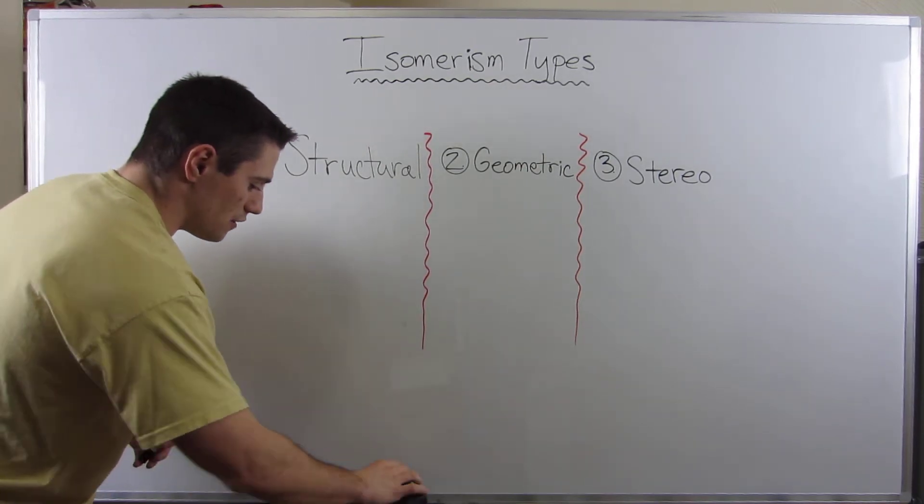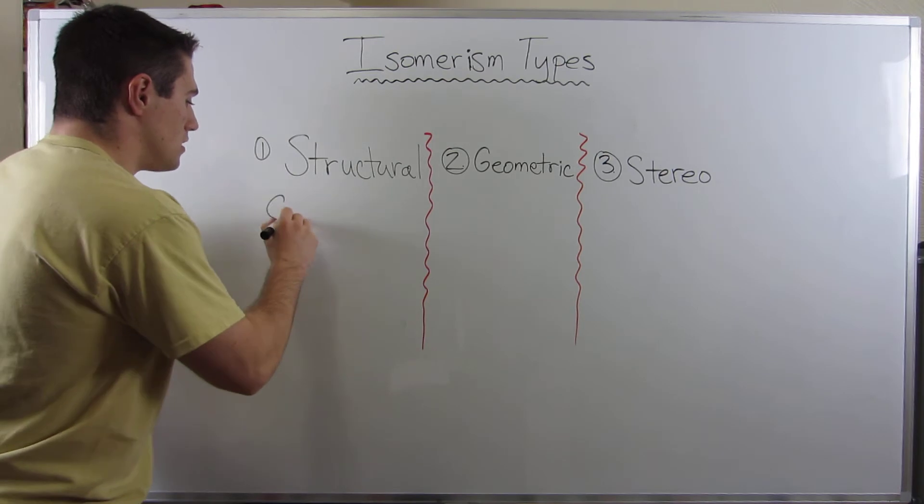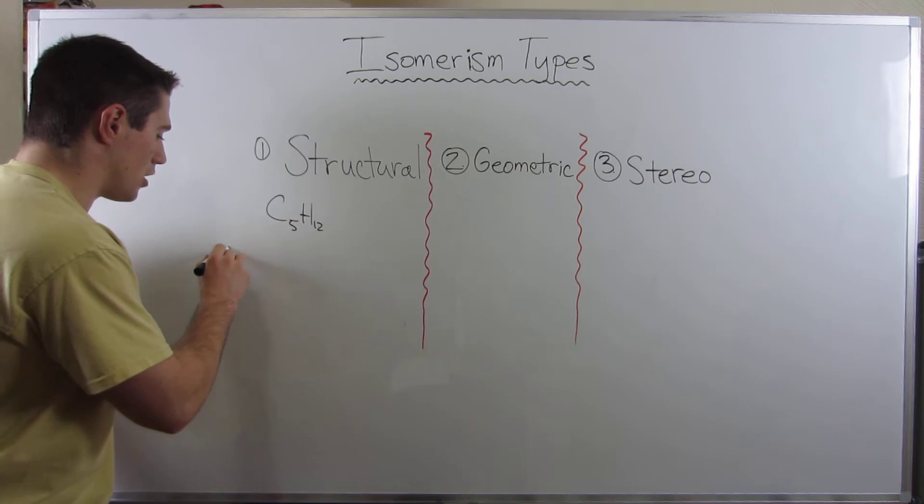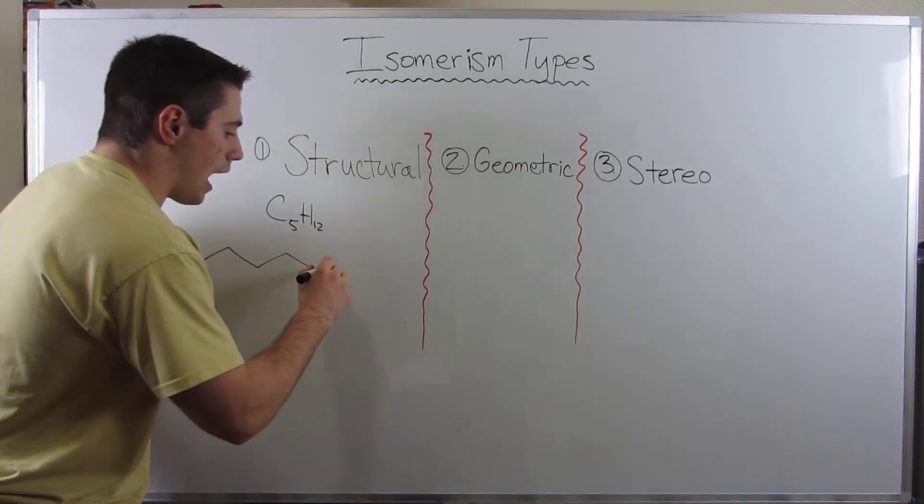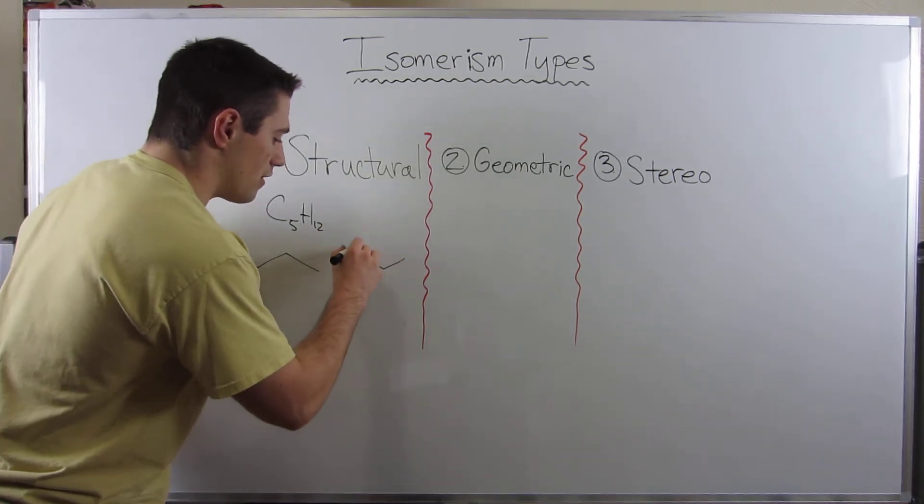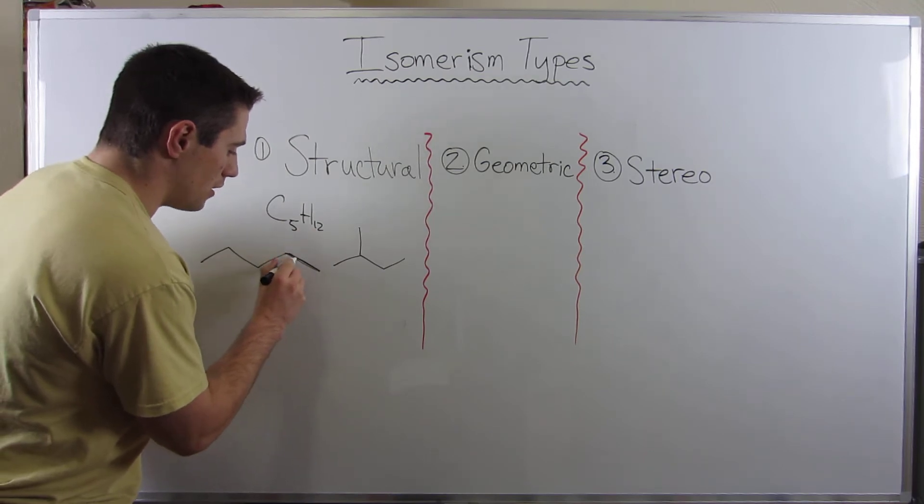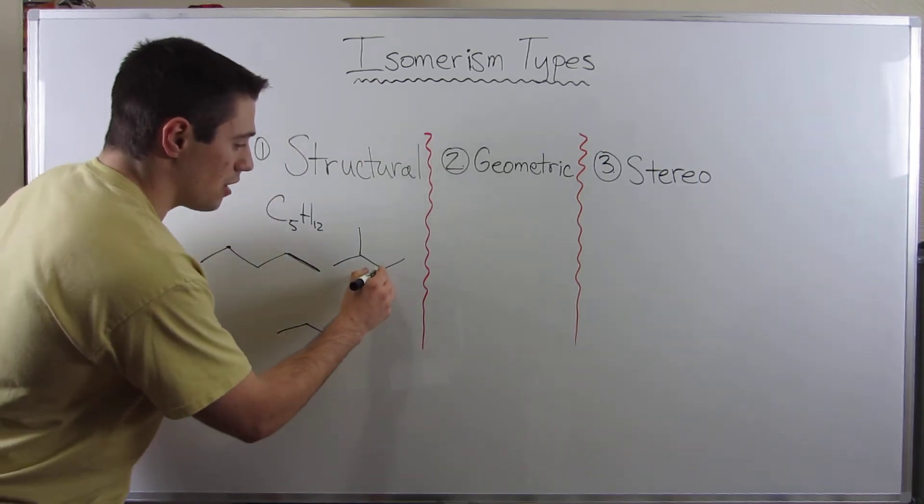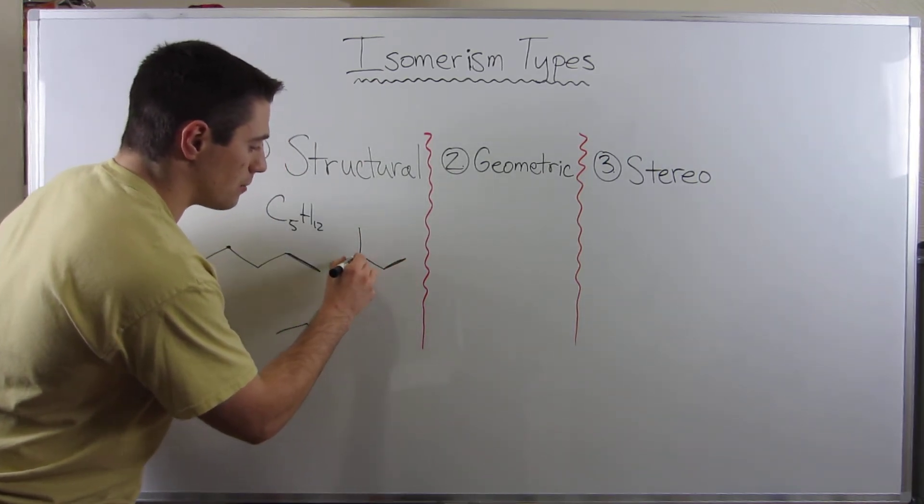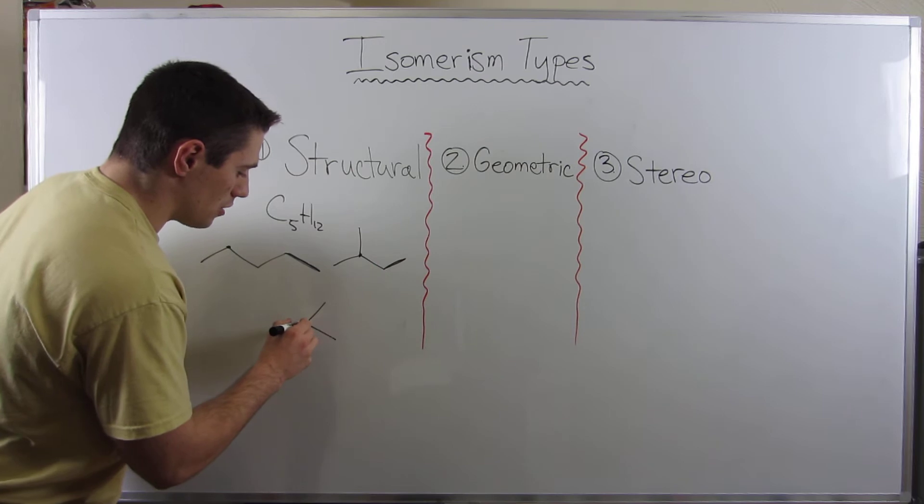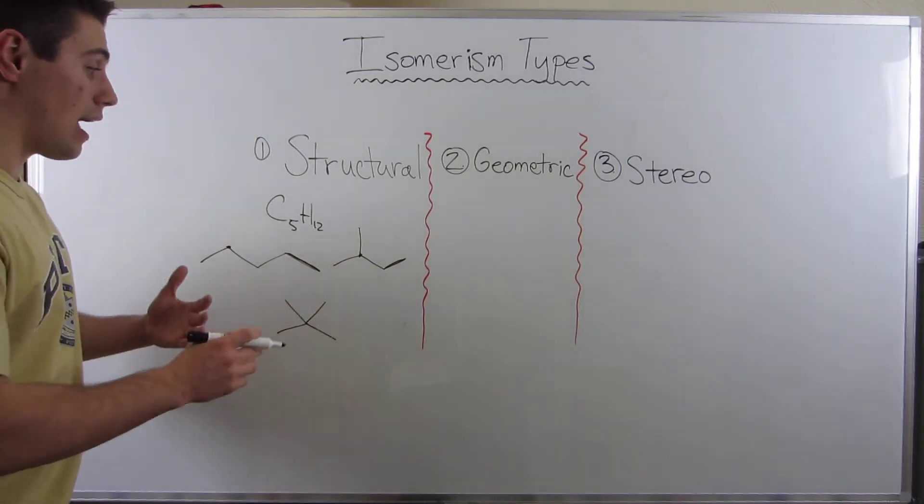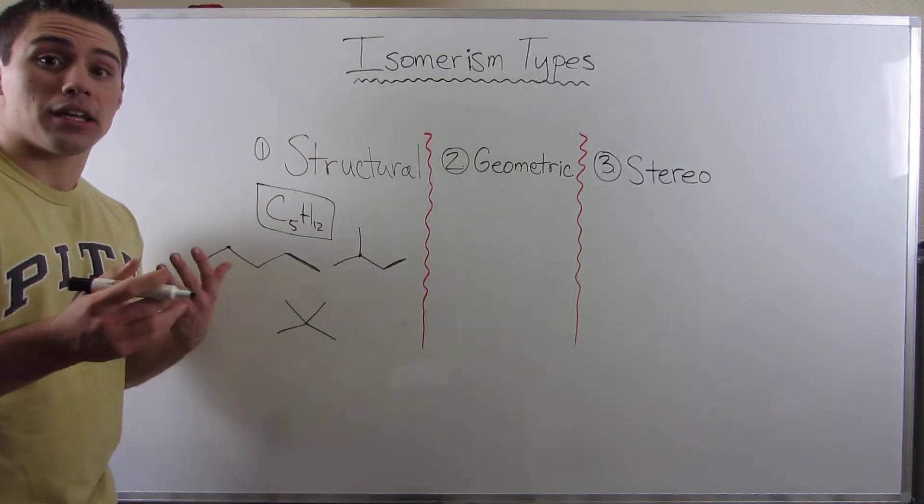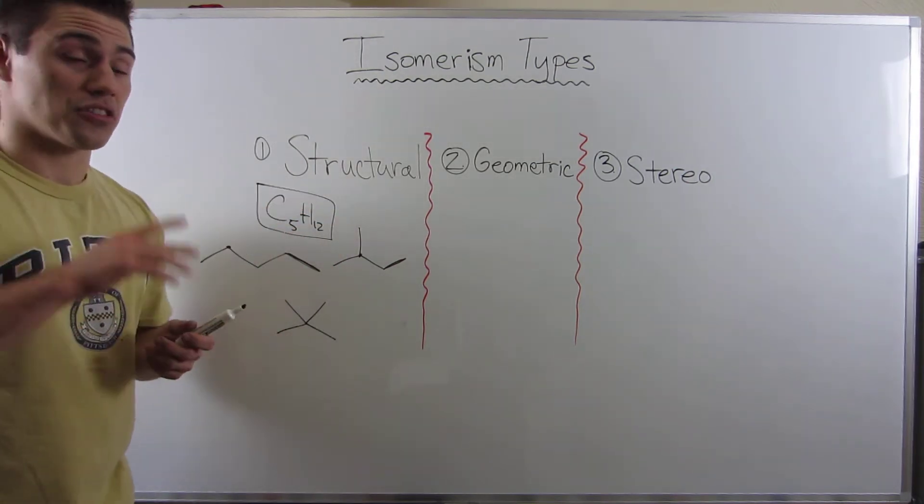So if I were to give you C5H12, just pentane, right? I could draw you straight chain pentane, I could then draw you this if I moved this methyl group up here. I could also draw you, if I took this methyl group and moved it up here, a structure that's called neopentane. Again, the formula stays constant, however, the atom-to-atom connections differ. Okay, so that's structural isomerism.